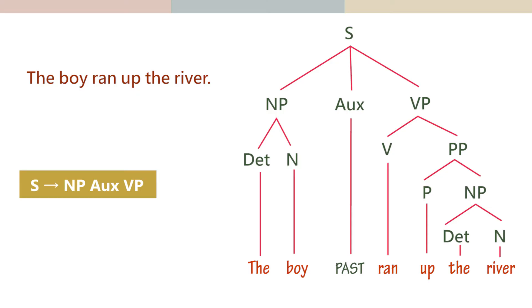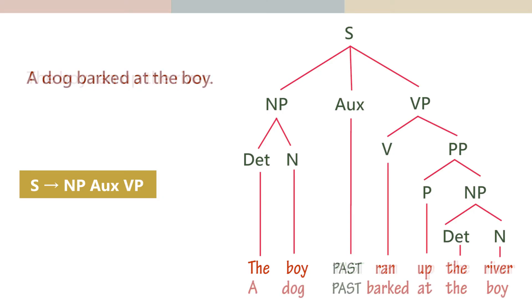For example, 'the boy ran up the river' also has the same tree structure as 'a dog barked at the boy.' It's a determiner noun, which is a noun phrase. The auxiliary is both cases past. The verb is ran. Then the verb could be barked.